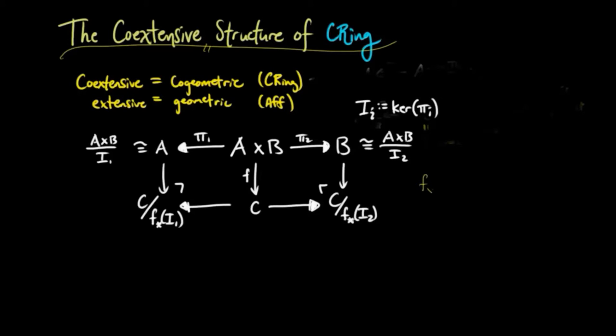And the congruences which give us these regular epimorphisms are given by F lower star I1 and F lower star I2, where these F lower star I sub I is the ideal generated by the images of I sub I under F in C.